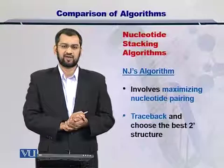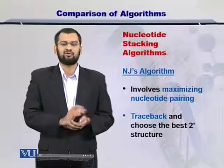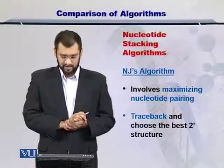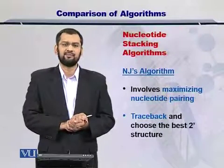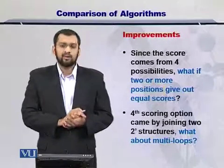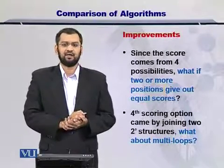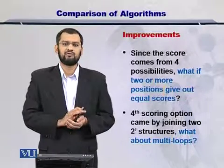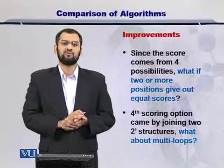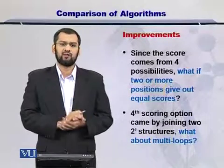Now let's take a look at the nucleotide stacking algorithms. The approach we have looked at is the Nusinov-Jacobson algorithm, or simply the NJ algorithm. It's a dynamic programming approach that tries to maximize the coupling of the nucleotides. You have the traceback strategy that is used to extract the structure from the entire matrix. The improvement for this algorithm can come from the scoring scheme, which in its current form considers four different positions in the matrix and takes the maximum from them. However, there are situations in which you may want to look at other positions.